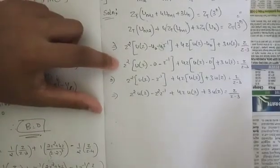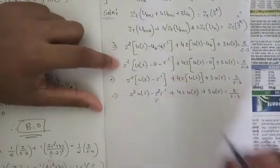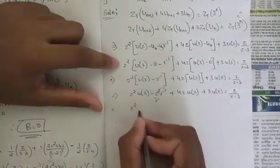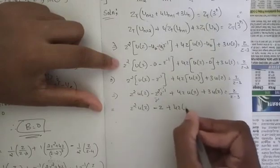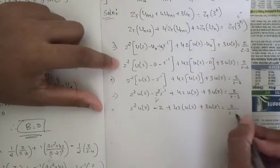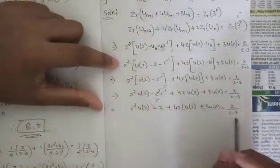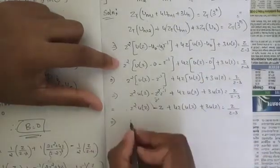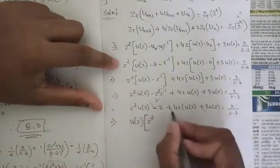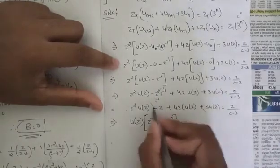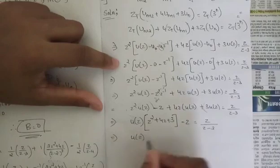Multiplying through: z²·U(z) − z + 4z·U(z) + 3·U(z) = z/(z−3). Here z²·z⁻¹ simplifies: z² divided by z gives z, so z²·z⁻¹ = z, and with the negative sign that term becomes −z. We can see that U(z) appears in three terms as a common factor.